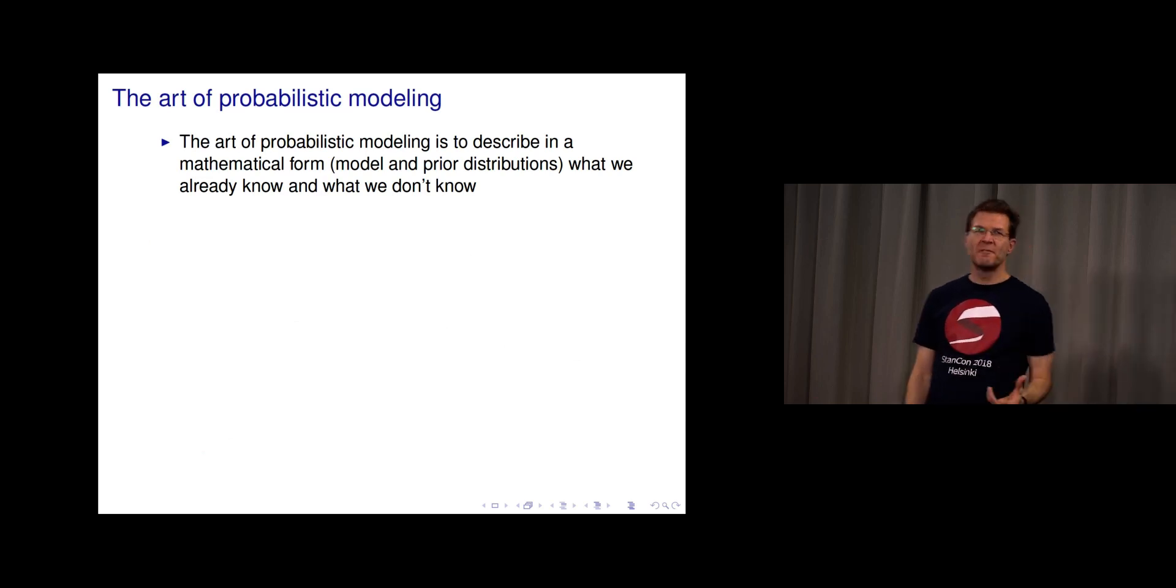When we have different data analysis problems, different phenomena to model, we need to formulate what we know in mathematical form. We need to formulate our epistemic uncertainties, possible structural knowledge, and those parts we can describe using distributions, these aleatoric randomness parts. We describe what we know and what we don't know in mathematical form.